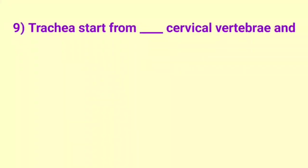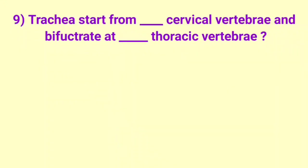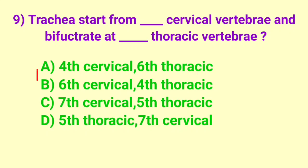Question number 9: Trachea starts from blank cervical vertebrae and bifurcates at blank thoracic vertebrae. Correct answer is option B, 6th cervical and 4th thoracic.